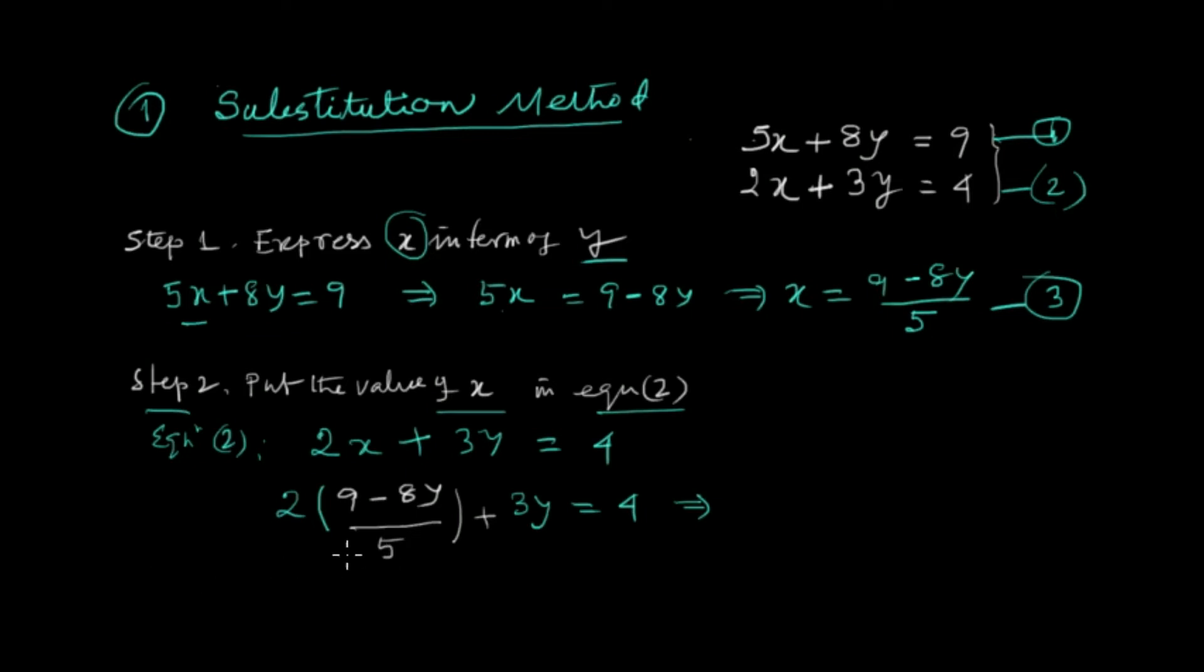For simplification, first we multiply with 5. So if we multiply all the terms by 5, then it will be 5 times 2 times bracket 9 minus 8y over 5, close bracket, plus 5 times 3y.